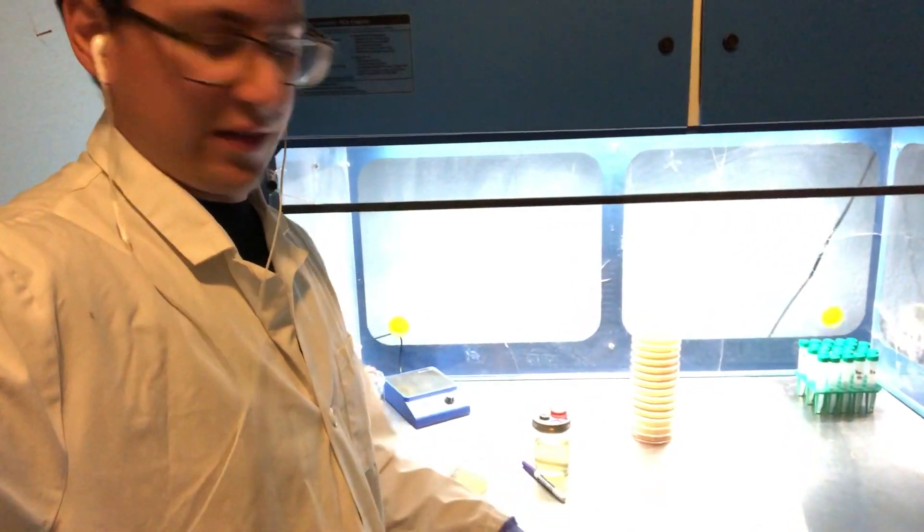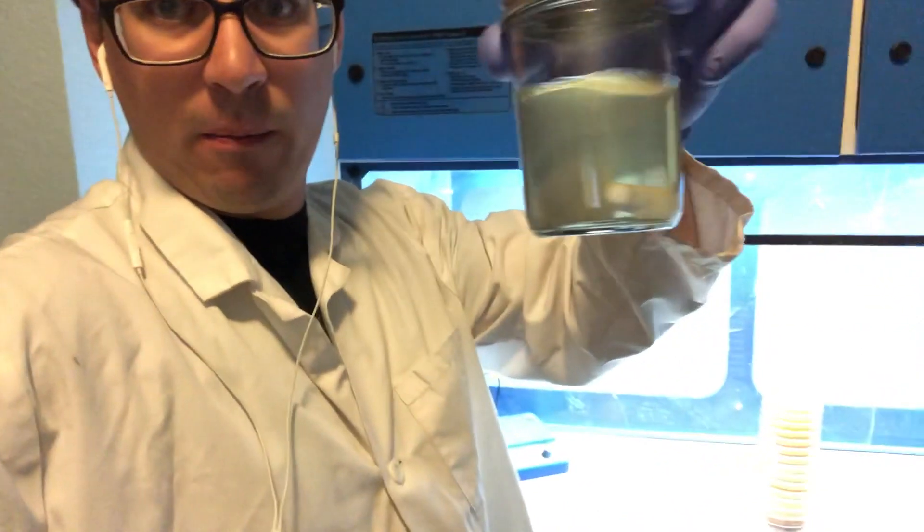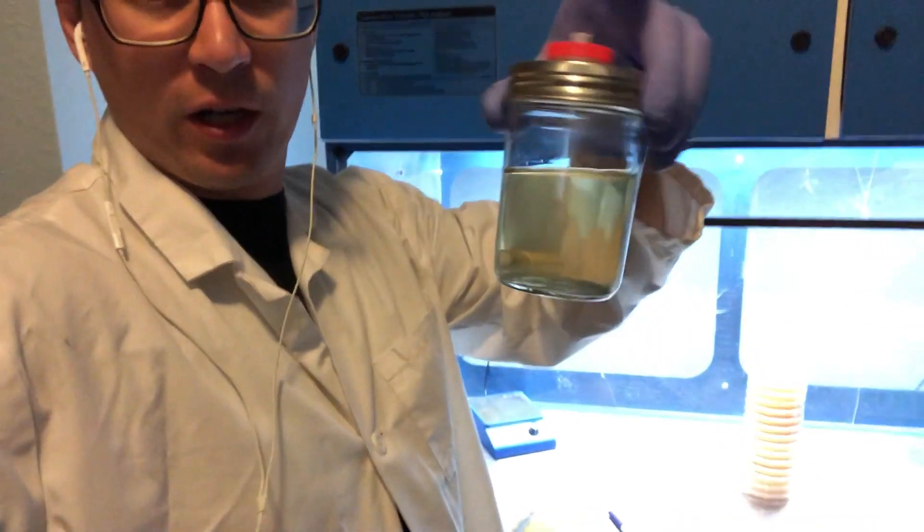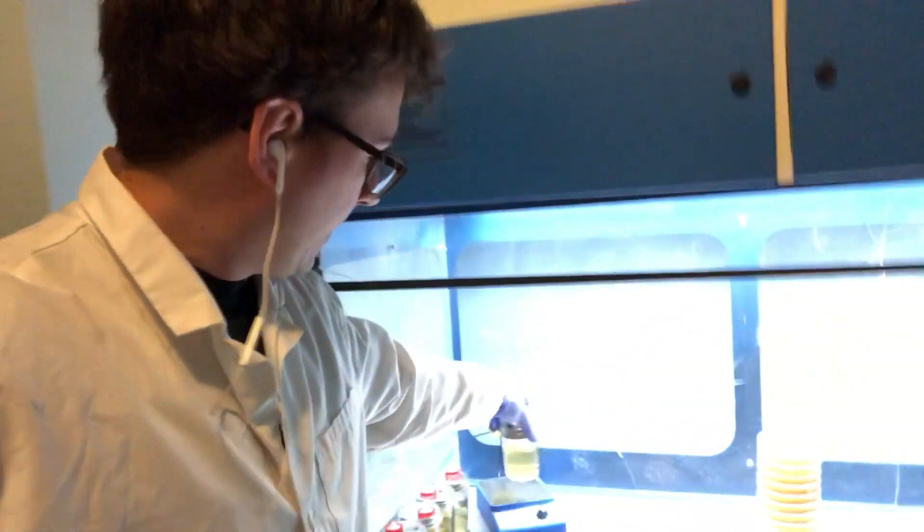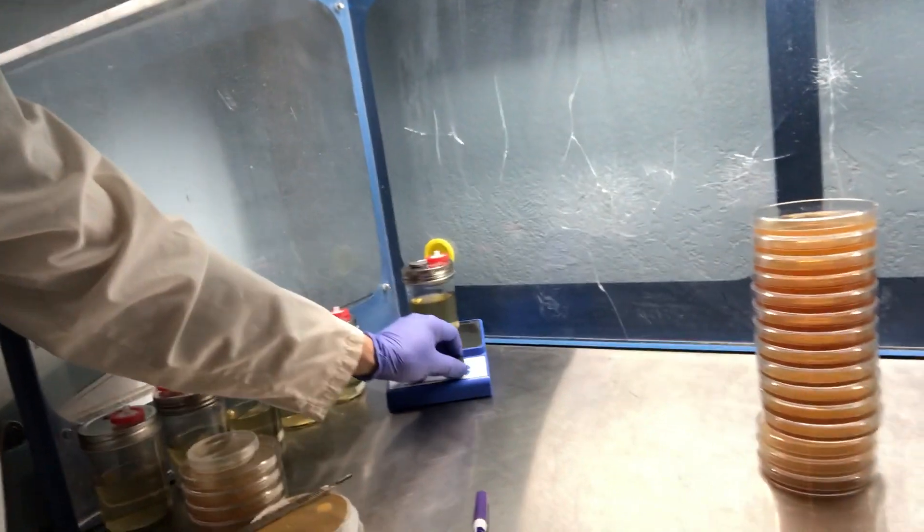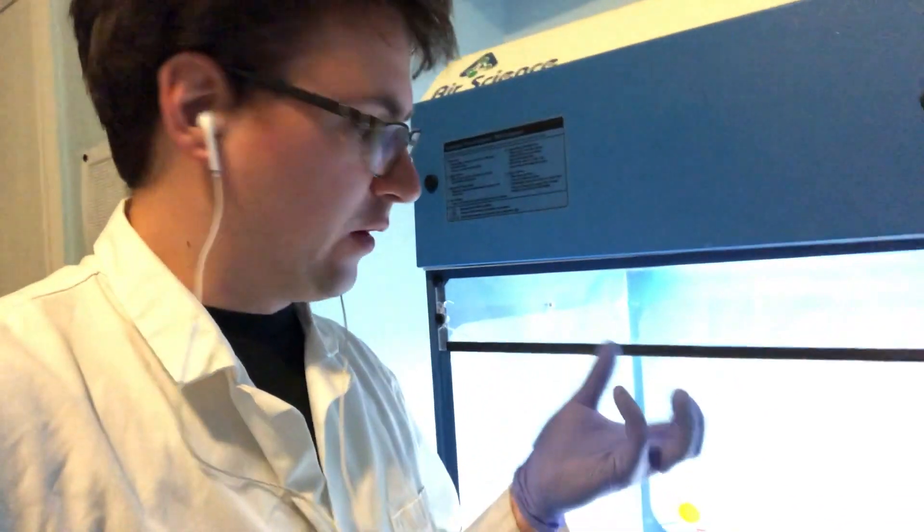Alright guys, so I've got my liquid culture here. It's a multi-spore liquid culture. This came from spore solution that have been diluted out 4 times. I'm just going to go ahead and place this on the stir plate here and let it mix around for about 72 hours. And then as those spores germinate they should collide with each other and form clamp connections.